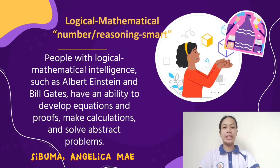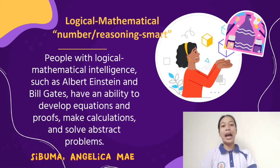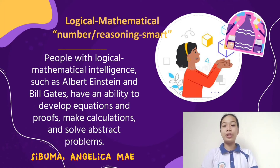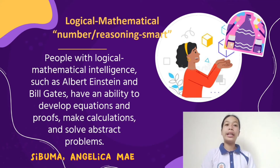Next is logical-mathematical or number and reasoning smart. People with logical-mathematical intelligence such as Albert Einstein and Bill Gates have an ability to develop equations and proofs, make calculations, and solve abstract problems. People who are strong in this area are good at reasoning, recognizing patterns, and logically analyzing problems — they tend to think conceptually about numbers, relationships, and patterns. Yung mga taong may ganitong talino ay interesado sa patterns, categories, and relationships, and have good deductive reasoning. Common careers include accountant, statistician, and scientist.